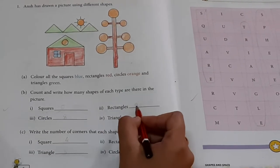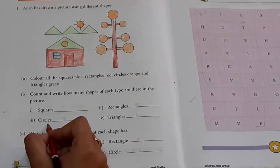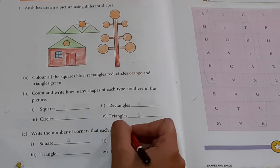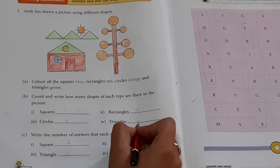Rectangle. Nine. Circles. Eight. Triangles. Four.